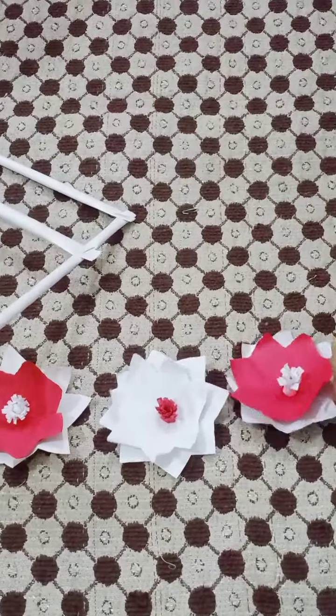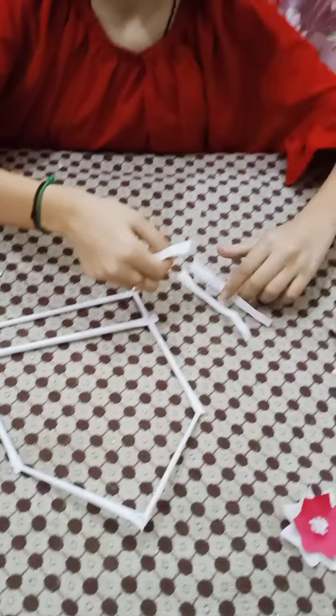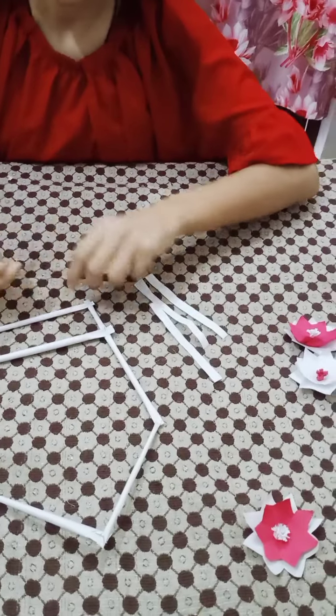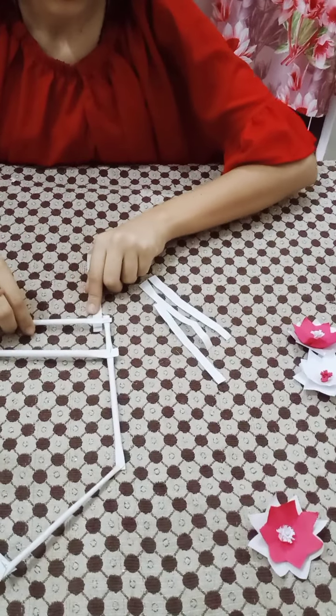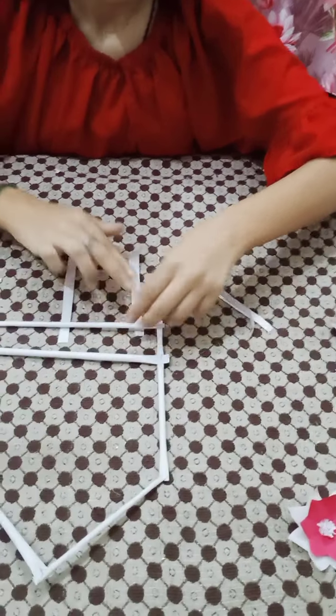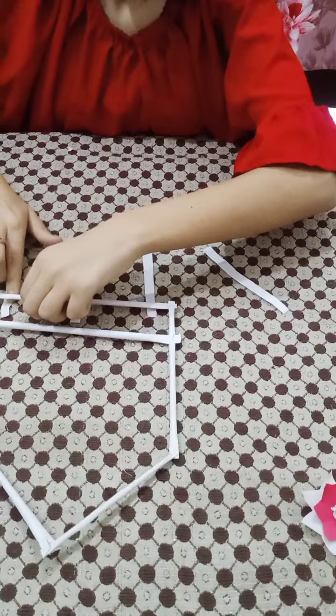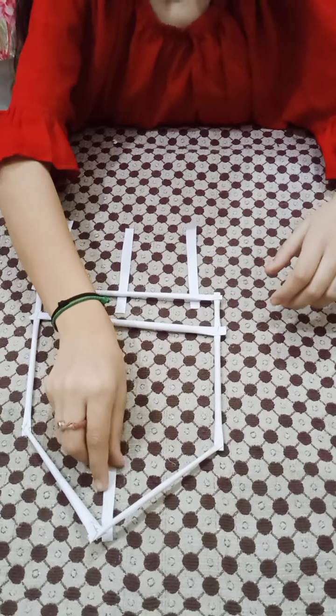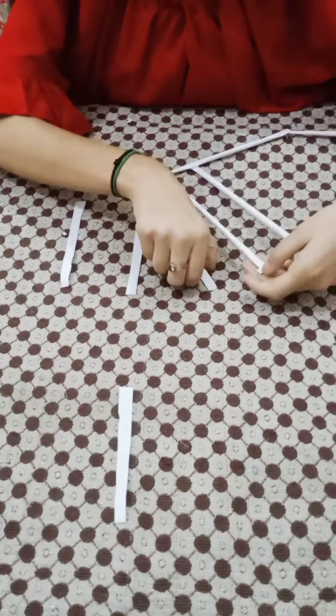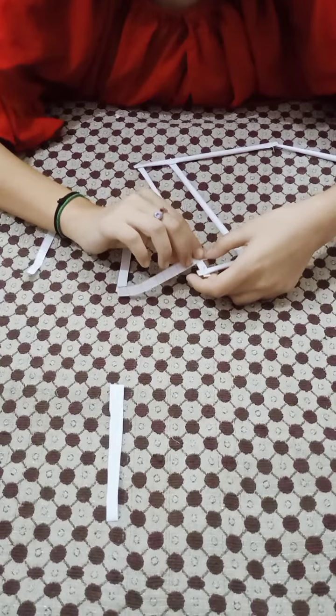We have to take a hanger. One. Take a strip of paper. One. Two. Three. And four. We have to paste it. Turn into that. First paste. Here.